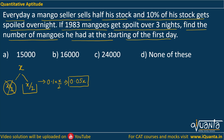What is the stock remaining after this? We had 0.5X and out of it 0.05X got spoiled. That means 0.45X is the stock that he will start with on the next day.